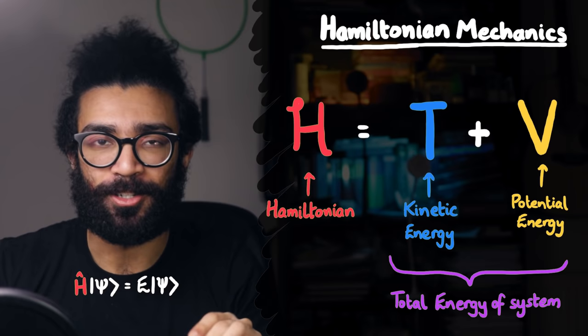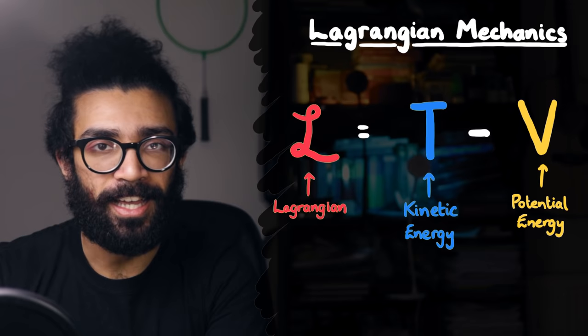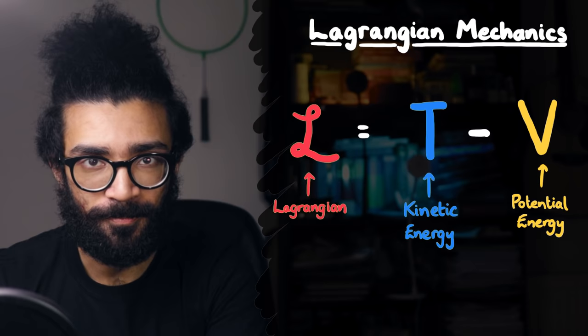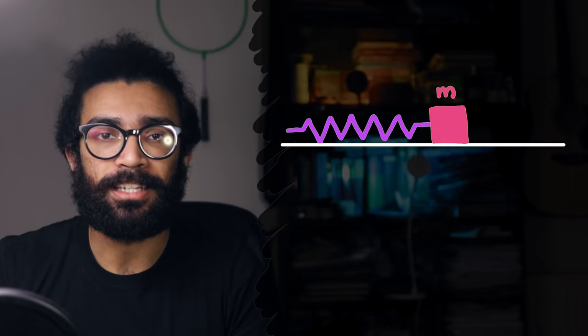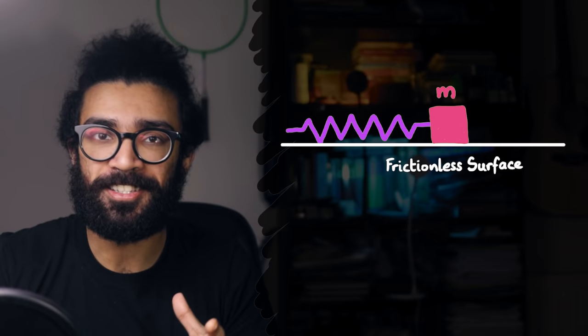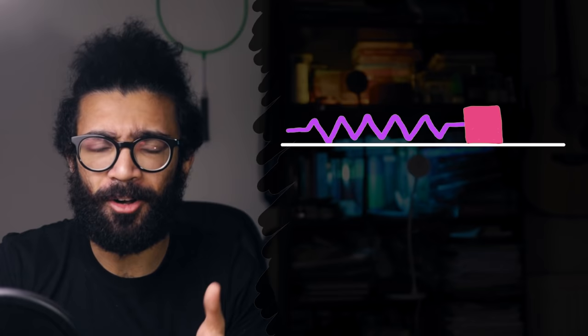So the Lagrangian deals with the kinetic and potential energies of a system. Let's take a look at an example of how we go about doing that. Let's consider one of my favorite basic systems, the classic mass attached to a spring. Let's also keep things simple and assume that we've got an ideal system, which means that all of the mass is in the mass, we don't worry about the mass of the spring. And let's also assume that the mass block is on a frictionless surface, which means there's no friction between the mass and the floor.